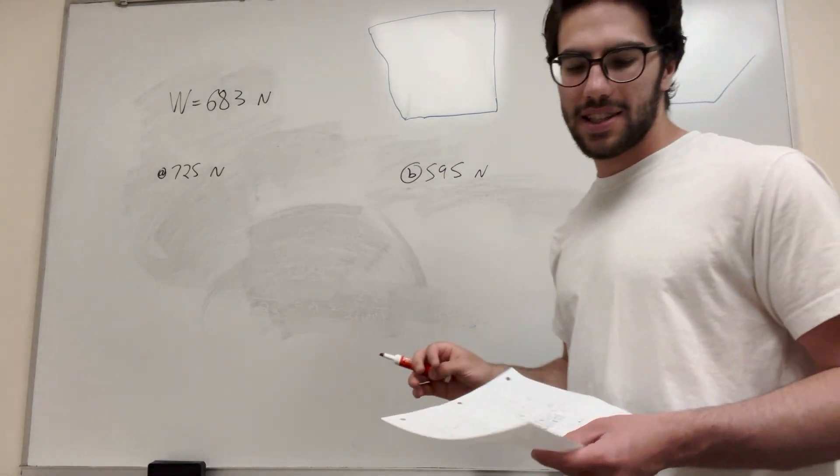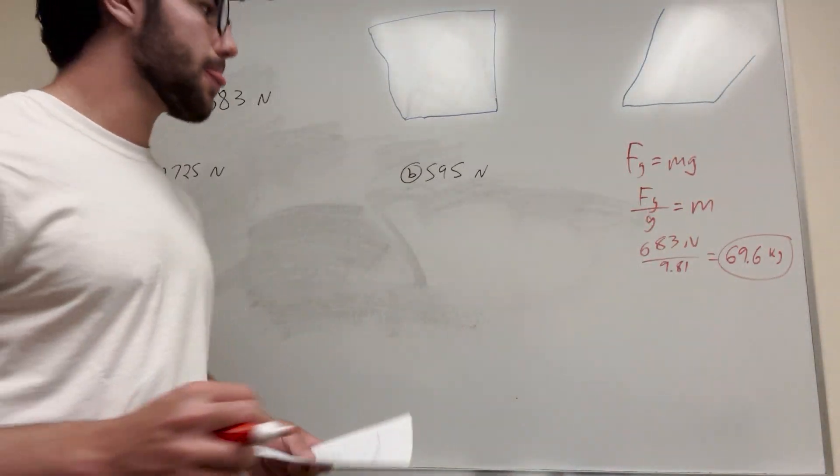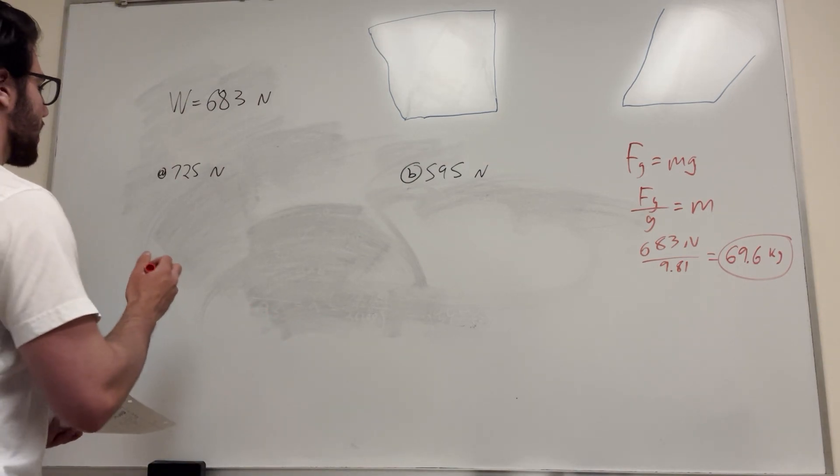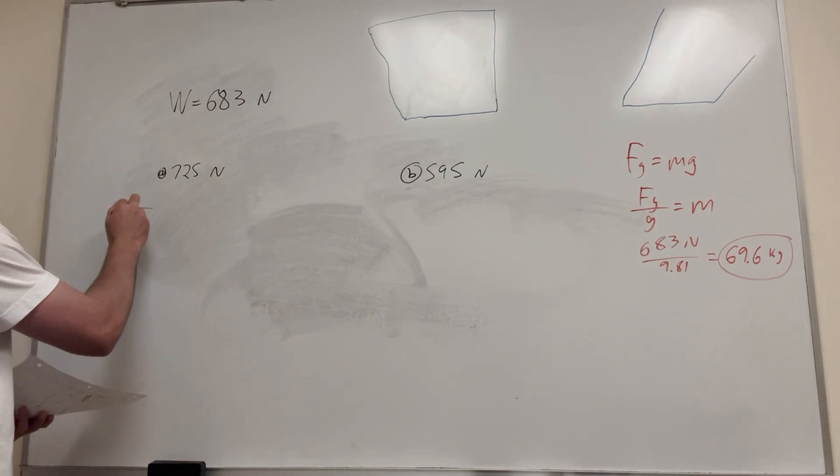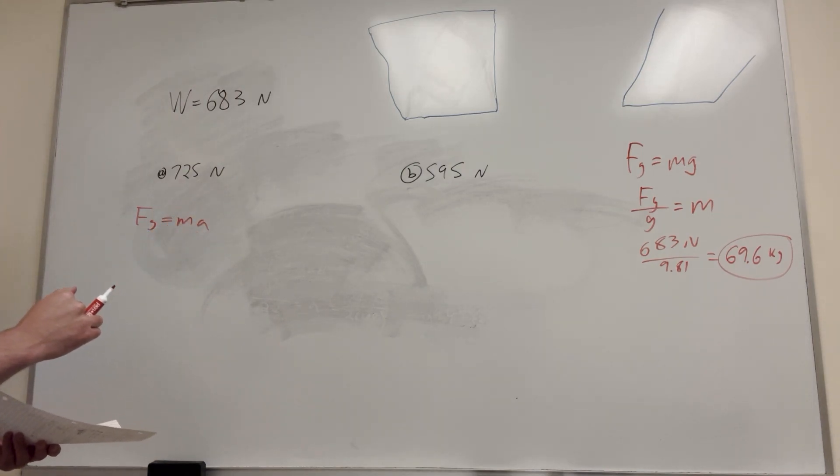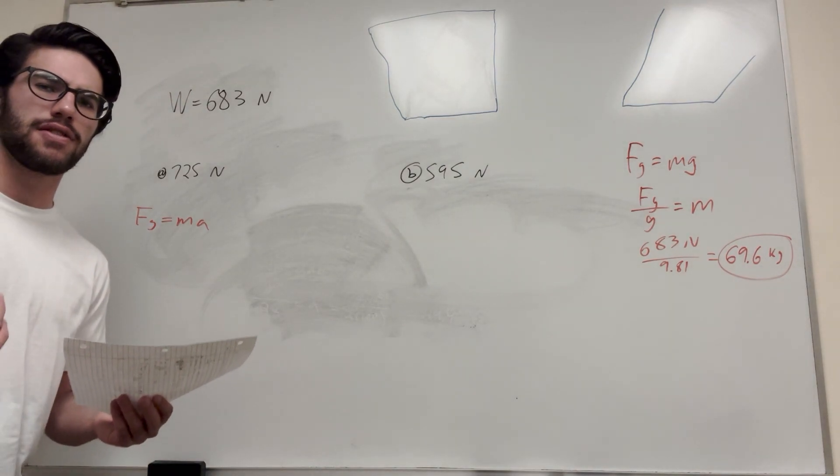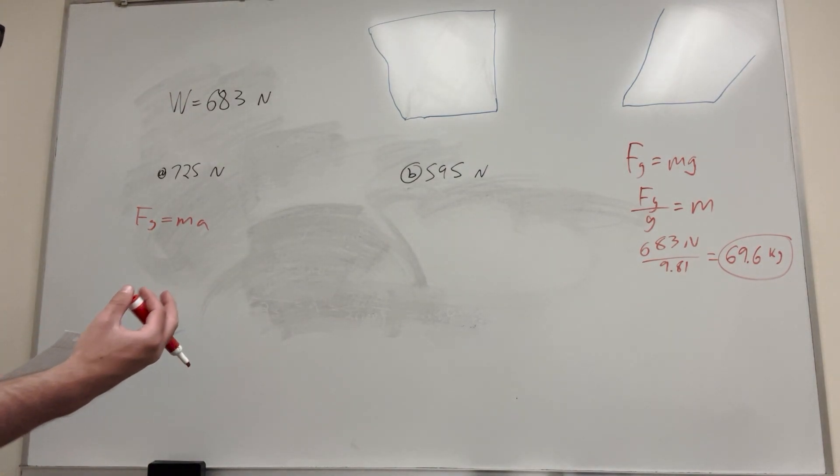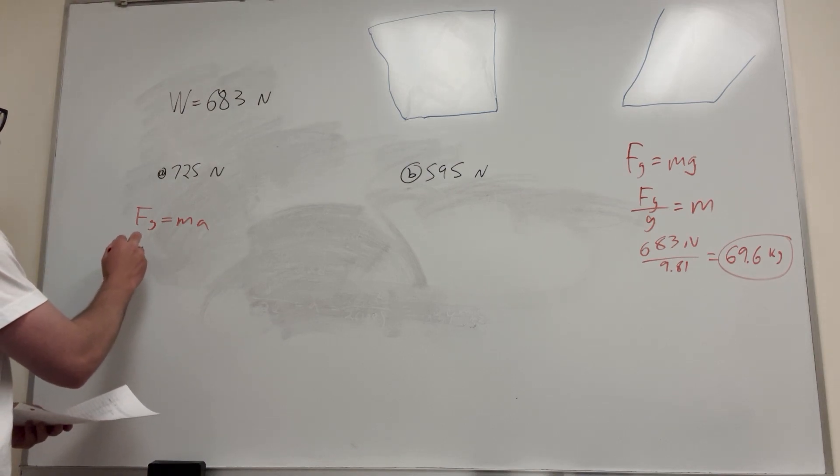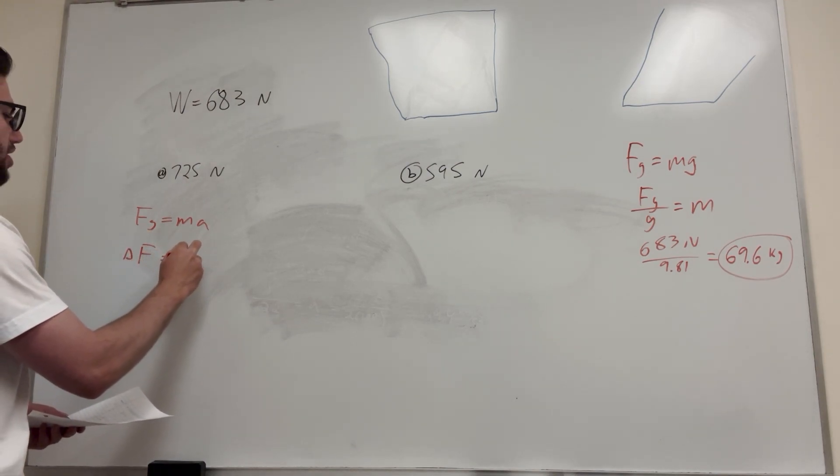Okay, so what next? So basically how fast is it accelerating? Well, we know that force of gravity equals mass times acceleration, so we're looking for acceleration. So what we're trying to figure out is how much is that force changing, right? Because on a normal surface we weigh this much with a normal acceleration of 9.81. But if we just take change of force equals mass times change in acceleration, right?